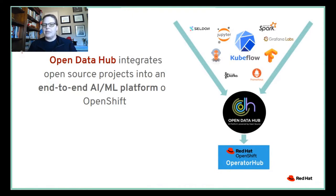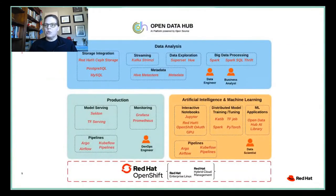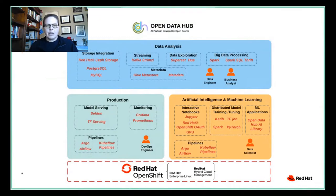We add components such as Grafana, Spark, Prometheus, JupyterHub, and Kafka. The platform addresses specific functionality in the end-to-end AI ML workflow. For data analysis, we have storage integration with Ceph, PostgreSQL, or MySQL. For data exploration, we might use Superset or Hue. For metadata, there's Hive Metastore. For big data processing, we may use Spark. These are things the data engineer and business analyst are very interested in.